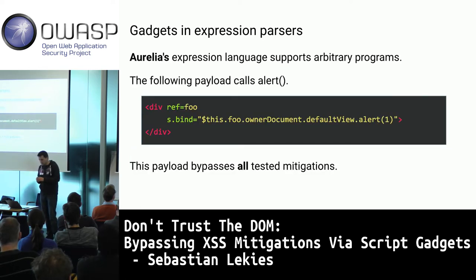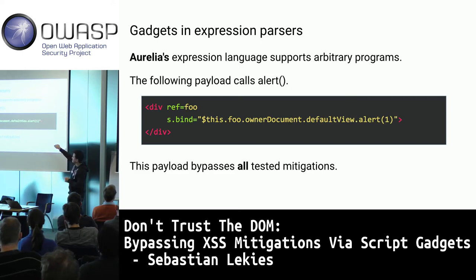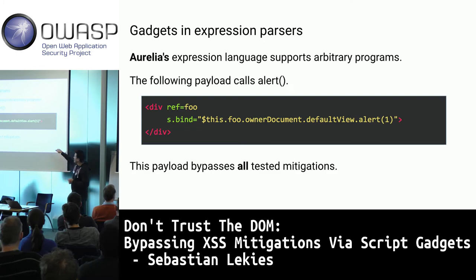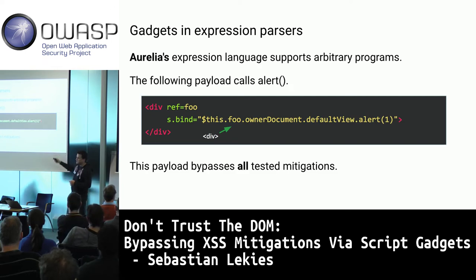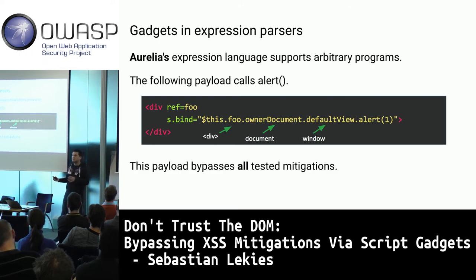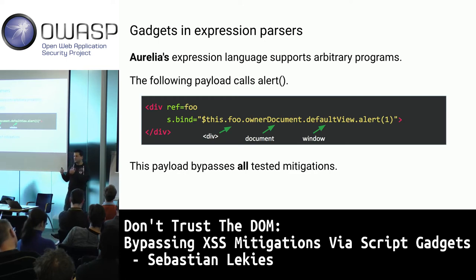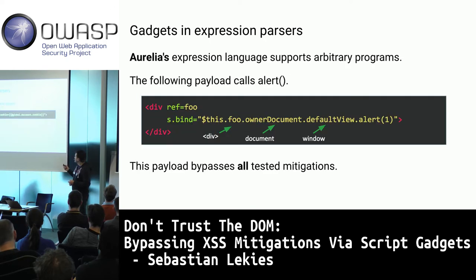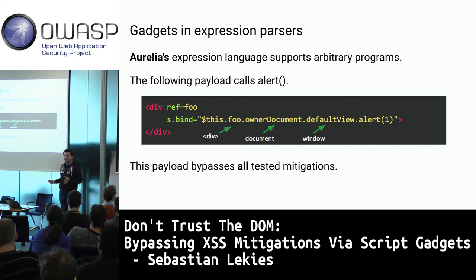Here's a payload in the Aurelia framework that calls the alert function. We give an element an s.bind attribute — no HTML semantics — and get a reference to the element. From there we access ownerDocument, which gives us the document object, which has a reference to the window object. In JavaScript, once you have a reference to window you can call alert. All JavaScript execution happens inside the legitimate Aurelia framework code.